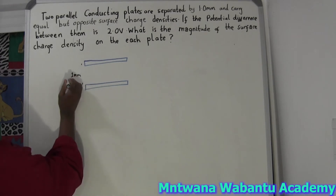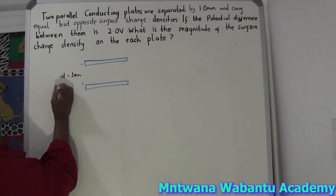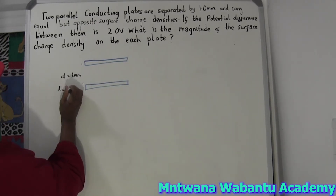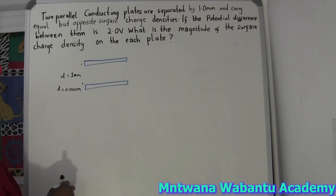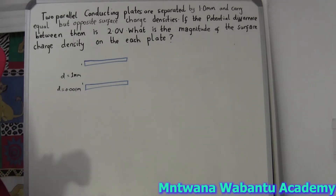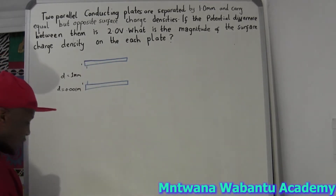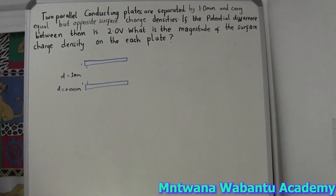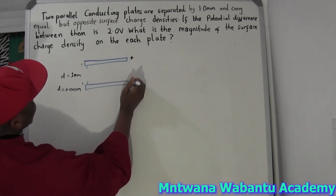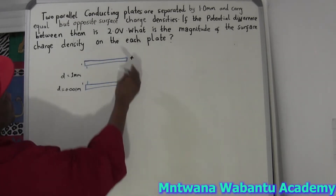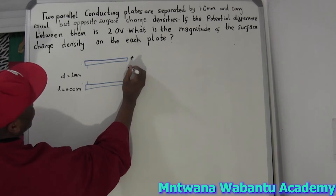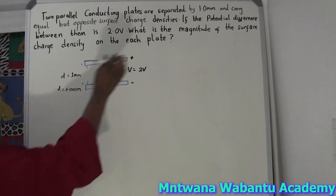The separation is one millimeter. If you change this to meters, because whenever we use distance we use meters, that's going to be 0.001 meters — you divide by one thousand to go from millimeters to meters. Our potential difference is equal to 2.0 volts. What is the magnitude of the surface charge density?